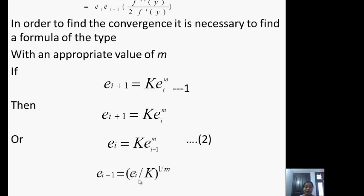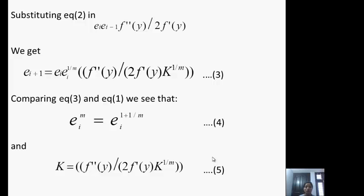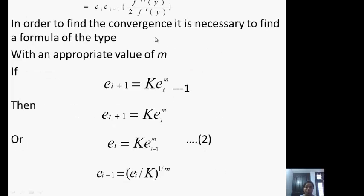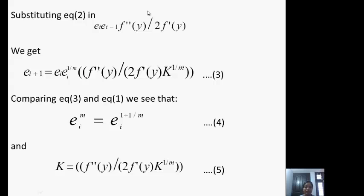Now substituting this value in equation 2, we get error in (i+1)-th iteration as e_i · e_i^{1/m}, that is e_i^{1 + 1/m} into this expression.